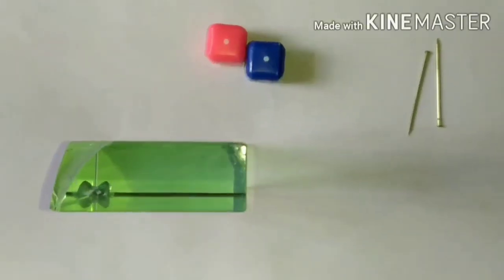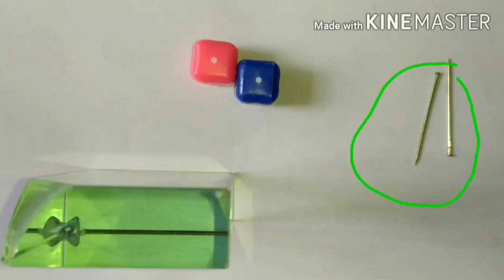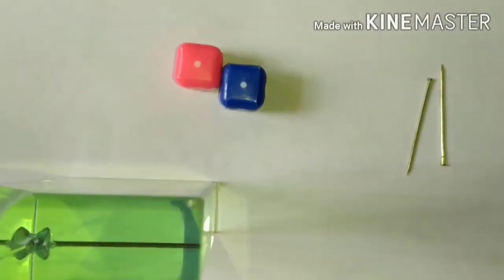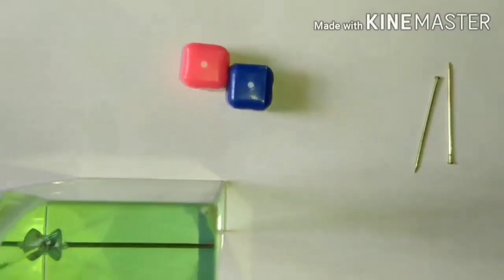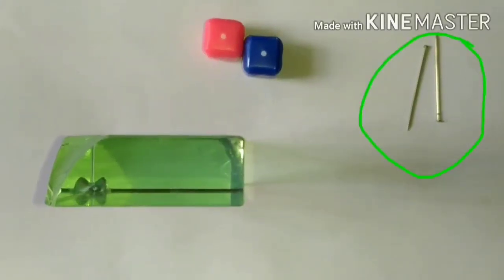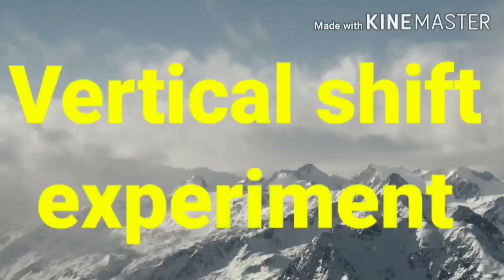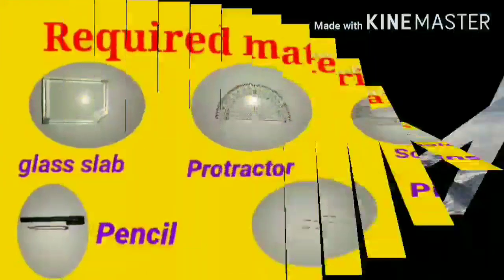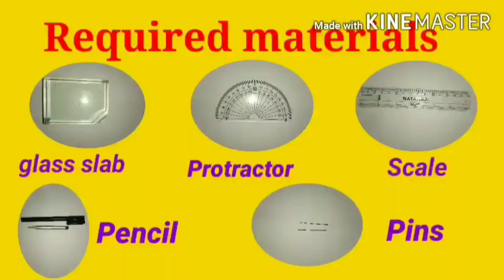For doing the vertical shift experiment, to reduce errors, we choose small objects like pins. The required materials are: glass slab, protractor, scale, pencil, and pins.